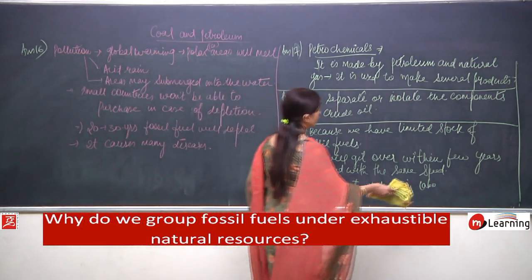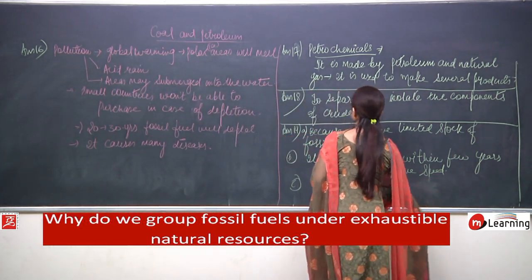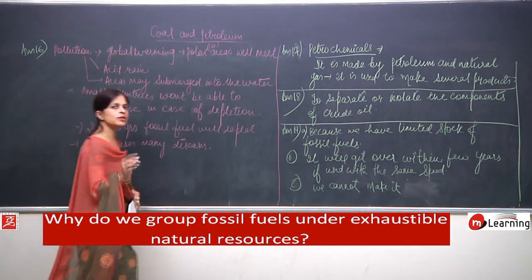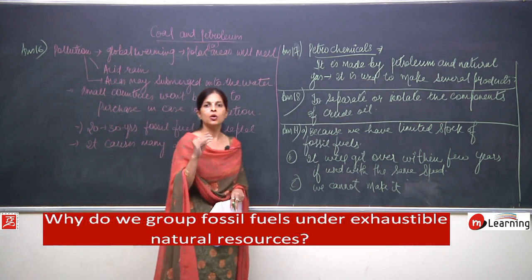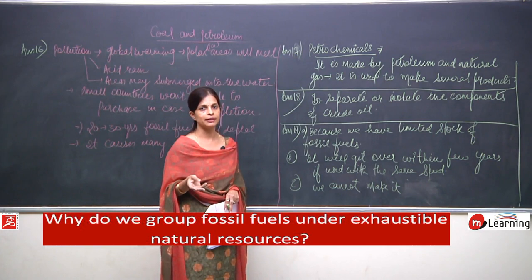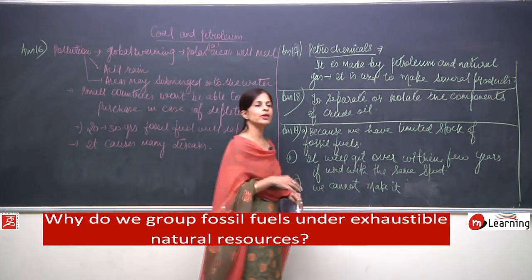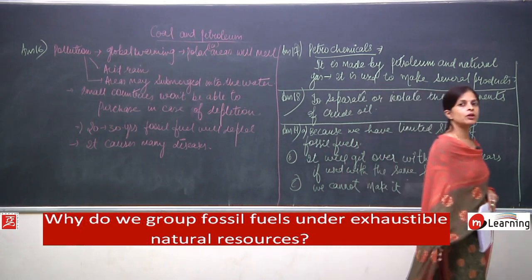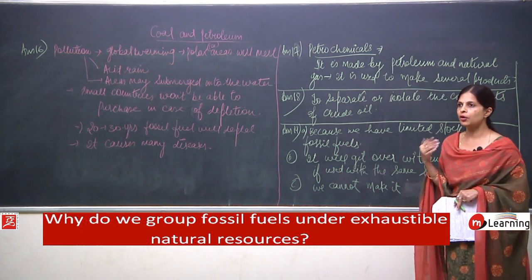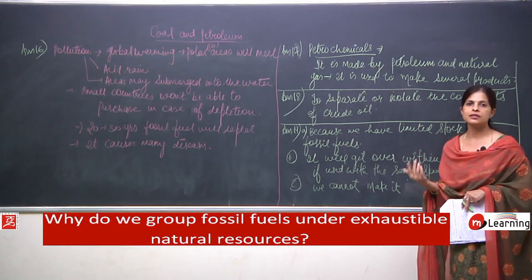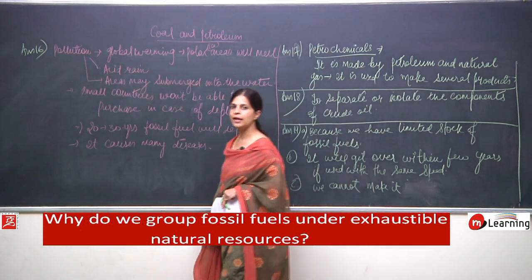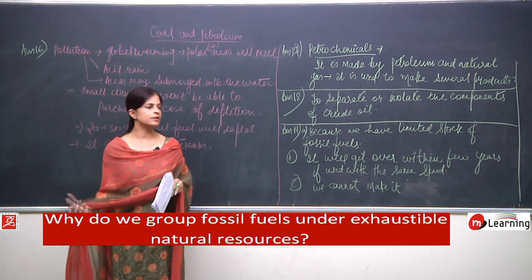The fossil fuels are known as exhaustible resources because the stock is limited. We have only a very limited amount which will be used within 20 to 30 years, and then there will be no source of getting these resources back. We cannot make them because the process takes millions of years - it is a very slow process - so these resources are known as exhaustible resources.